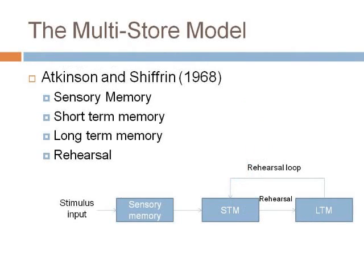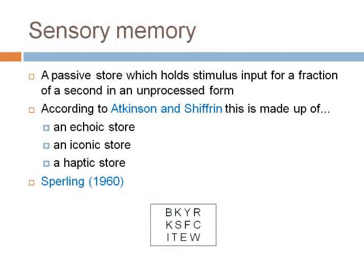The multi-store model. Atkinson and Shiffrin in 1968 proposed this first simple model of memory. They proposed that it comprised of a sensory, short-term and a long-term memory store, and that the only way to transfer from short-term to long-term memory was by the process of rehearsal or rote repetition. In the exam you could be asked for more information on each of the memory stores. Sensory memory is a passive store which holds stimulus input for a fraction of a second in an unprocessed form. According to Atkinson and Shiffrin there are three stores as part of the sensory memory: the echoic, the iconic and the haptic store. Research has been carried out by Sperling in 1960 into this store. Make sure you check your notes for details of this investigation, including the procedures, findings and conclusions.